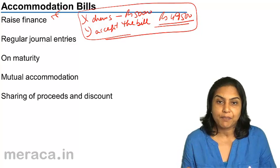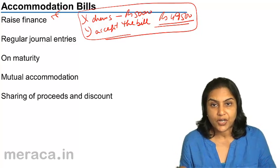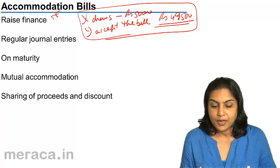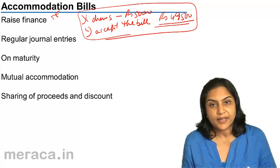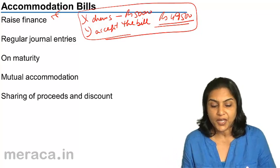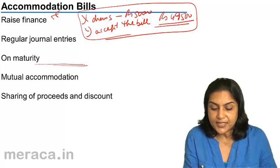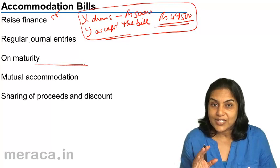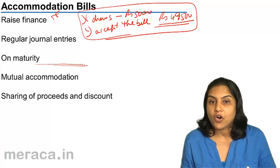On the due date, the acceptor must pay the money whether or not he receives funds from X. The usual journal entries are passed in the books of both the drawer and the acceptor — in the books of X and Y, the creditor and the debtor. On maturity, the understanding is that the person who drew the bill will send the money to the acceptor so that he can honor the bill.